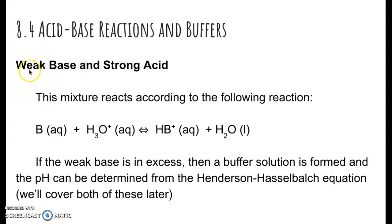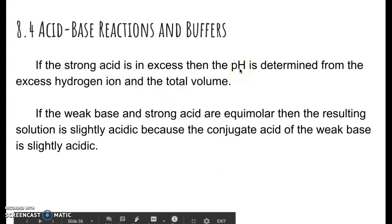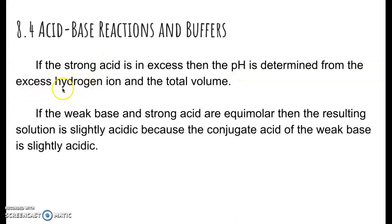The next combination is weak base and strong acid. The hydrogen ion is transferred to the weak base, forming the conjugate acid HB+. If there's excess weak base and some conjugate acid, it's again a buffer — use Henderson-Hasselbalch. Excess strong acid drives pH down. If equal molar amounts, the conjugate base of the strong acid is too weak to do anything, but the conjugate acid of the weak base makes the solution slightly acidic, around pH 5 or 6.